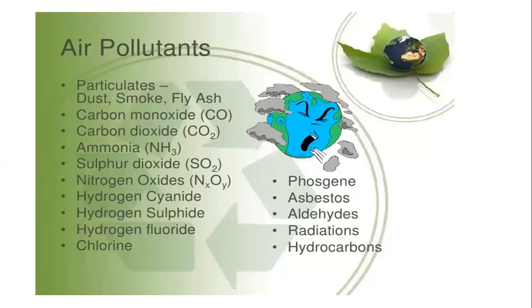What are the major air pollutants? The particulates like dust, smoke, fly ash, carbon monoxide, carbon dioxide, ammonia, sulfur dioxide, nitrogen oxide, hydrogen cyanide, hydrogen sulfide, hydrogen fluoride, chlorine, phosgene, asbestos, aldehyde, radiation, and hydrocarbons. These are the major air pollutants.